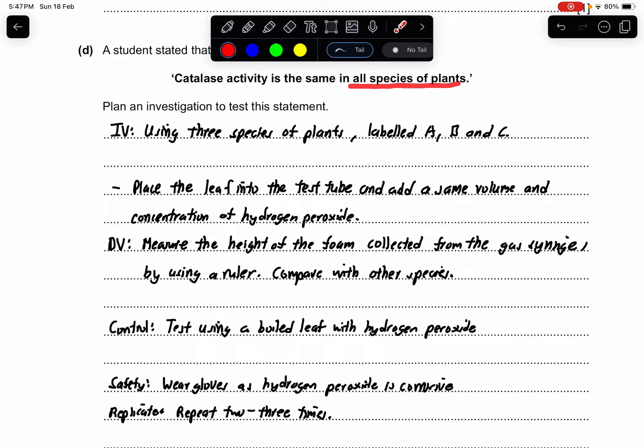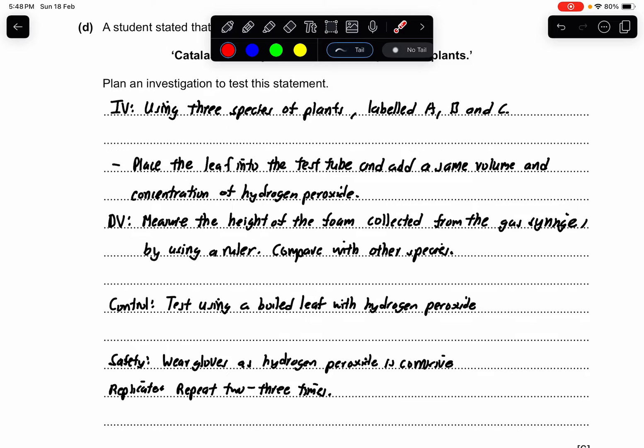So the IV, they have stated that in all species of plant. For this experiment, I want to test whether it's the same, so I use three different plant species. Then I place the leaf into the test tube and add the same volume and concentration of hydrogen peroxide. From here, I get two marks already, which is for my constant variable. Enough already. The next one, DV: measure the height of the foam collected from the gas syringe. This is very important. Whenever you want to measure the gas volume, you must mention either gas syringe or inverted measuring cylinder. Then you use a ruler to measure the foam, same as the first part of the question. And then you compare with other species.